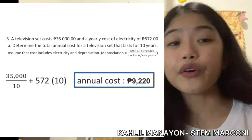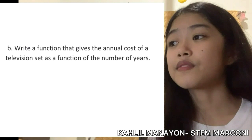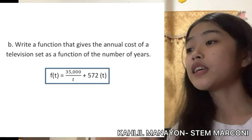So 35,000 over 10 plus 572 multiplied by 10 gives a total annual cost of 9,220 pesos. For question b, we write a function that gives the annual cost of a television set as a function of the number of years: f of t equals 35,000 over t plus 572 times t.